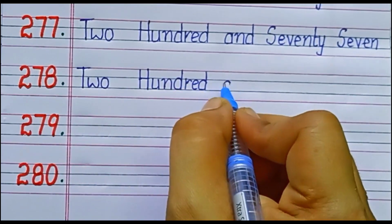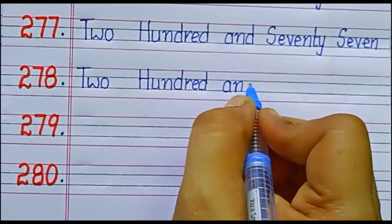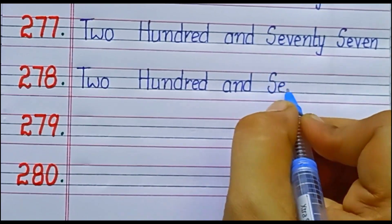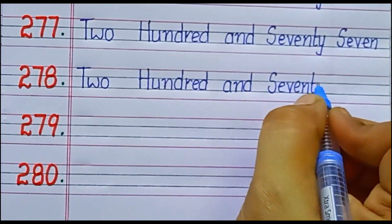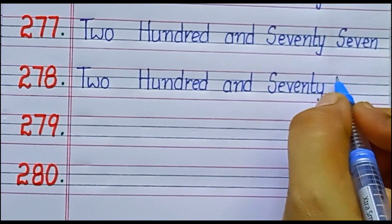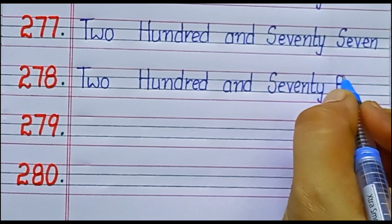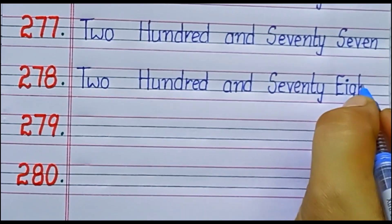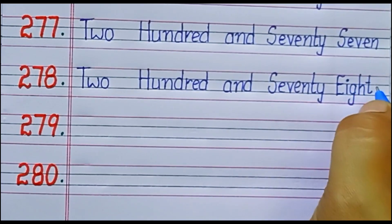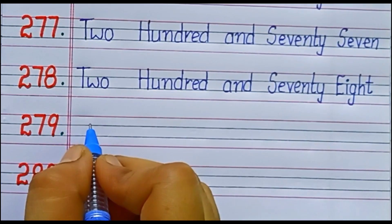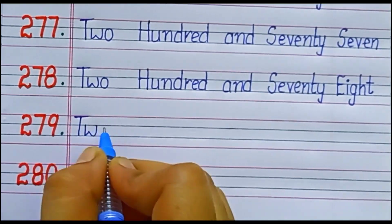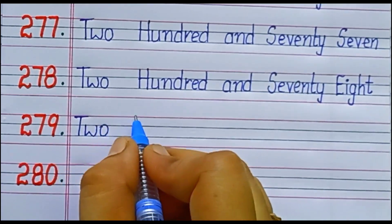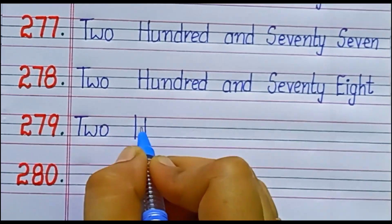278. S-E-V-E-N-T-Y, 70. E-I-G-H-T, 8. 78. Two hundred seventy-eight.